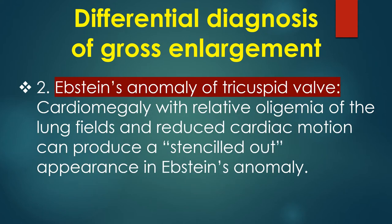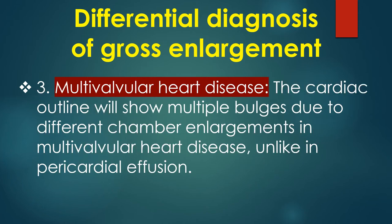2. Ebstein's anomaly of the tricuspid valve. Cardiomegaly with relative oligemia of the lung fields and reduced cardiac motion can produce a stenciled-out appearance in Ebstein's anomaly. 3. Multivalvular heart disease. The cardiac outline will show multiple bulges due to the different chamber enlargements in multivalvular heart disease, unlike in pericardial effusion.